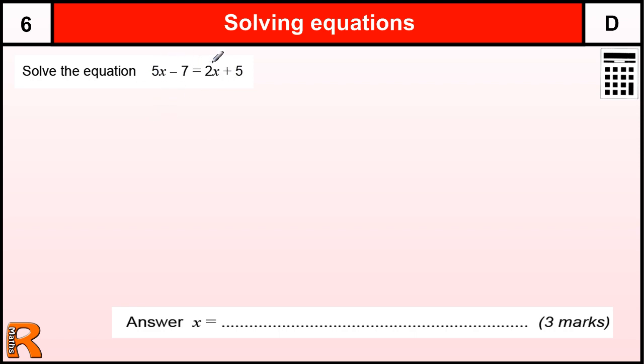Our first step is to make the x's go to one side, and the best way to do that is to take away the smaller amount of x. So this is 2x, take it away from both sides, we get 3x minus 7 equals 5.